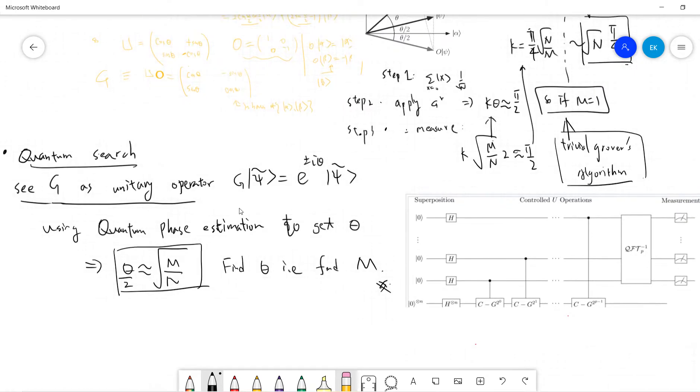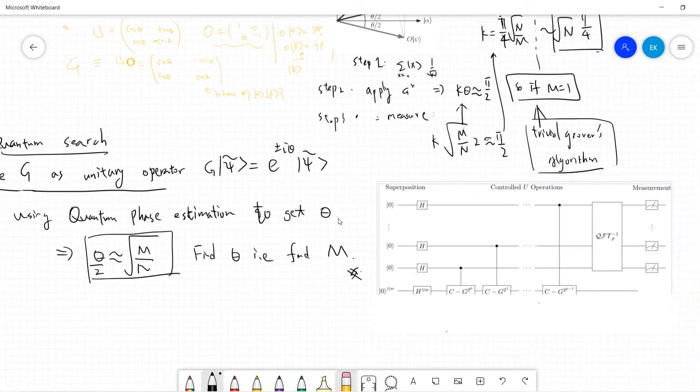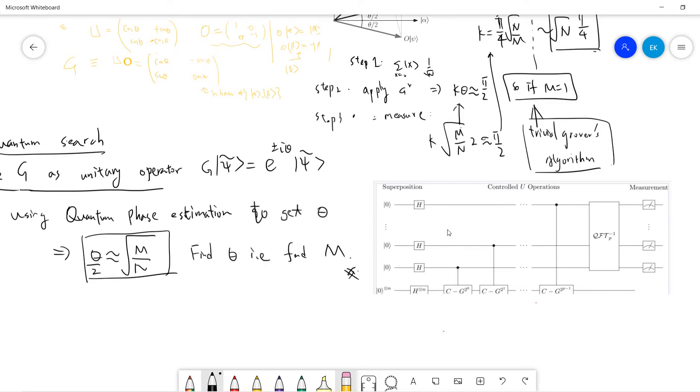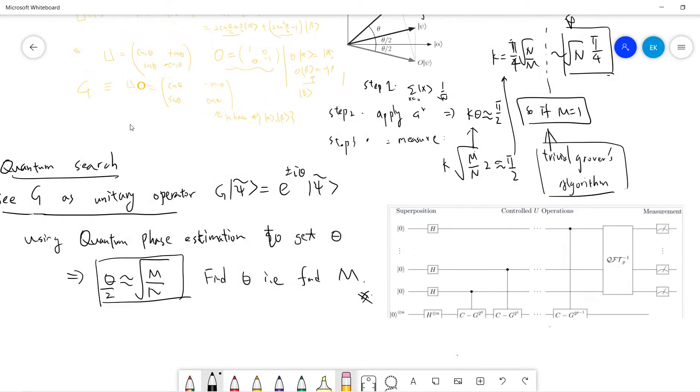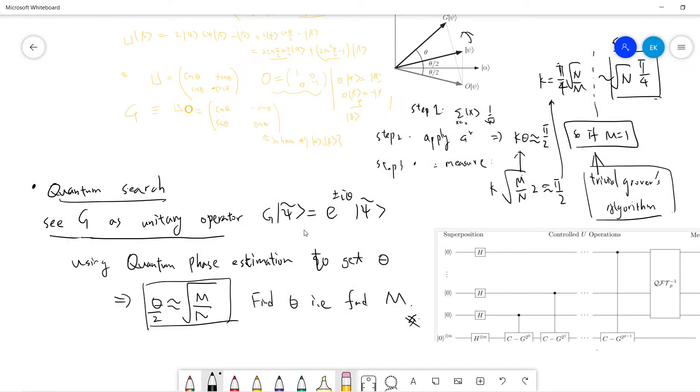So if one can use the quantum phase estimation, right? Since we already know in the previous lecture, we know how to do the quantum phase estimation. So we just provide many of the controlled G gates. In the previous lecture we used the controlled U gates, but now we use the quantum phase estimation to act on this G and get this θ. So we get θ/2 ≈ sqrt(M/N).